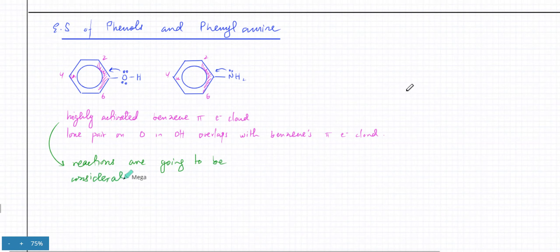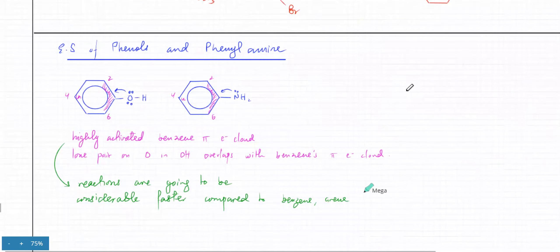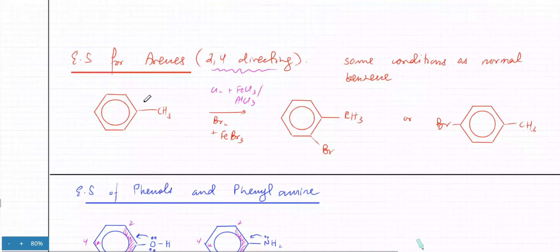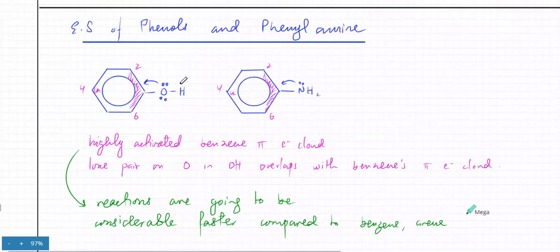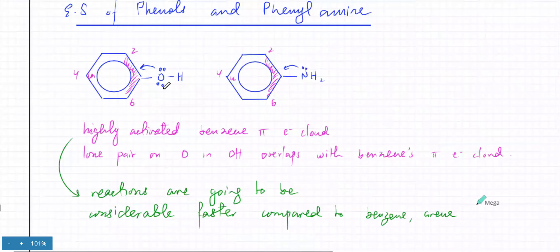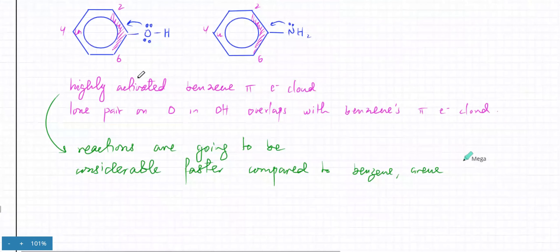So even the reaction conditions are going to change — considerably faster compared to benzene and arene. An arene is just a benzene with a carbon chain. Carbon chains were electron-donating too, but they had no lone pairs — all electrons of carbon were bonded, so the push was very small. But oxygen has two lone pairs not doing anything, so those electrons get delocalized — electrons repel each other and distribute into the pi cloud.